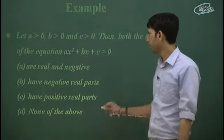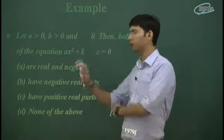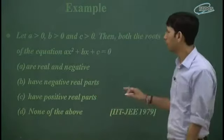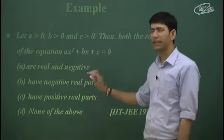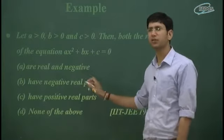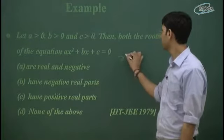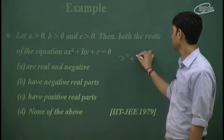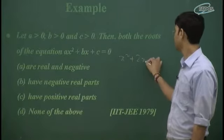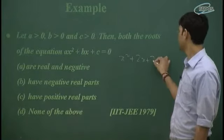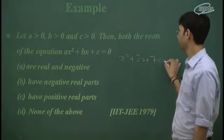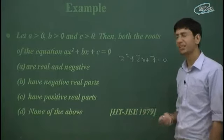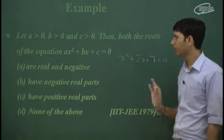Try it. We have negative real parts, we have positive real parts. Roots are real and negative — you can say that it is wrong. I can give you an example: x squared plus 2x plus 7 is equal to 0. A, B, C is positive. Roots are real.